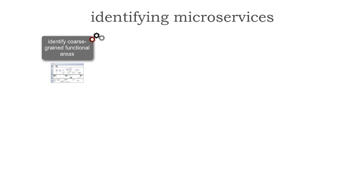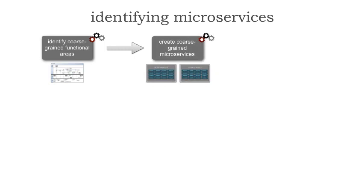First — and notice this is a function-driven top-down approach — identify coarse-grained functional areas of the application, and then through decomposition start breaking those apart into coarse-grained microservices. This is still a function-driven top-down approach. Ignoring all the other dimensions is where we run into trouble. The key point here is to create coarse-grained microservices.